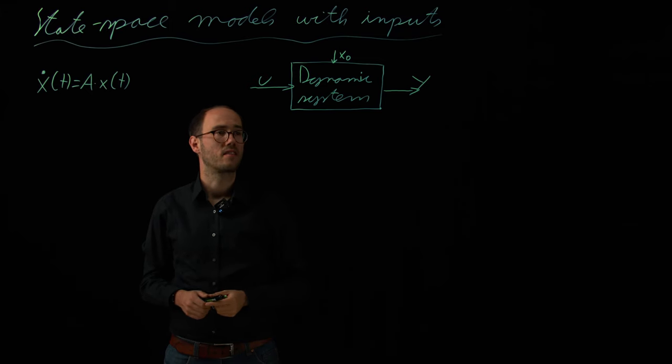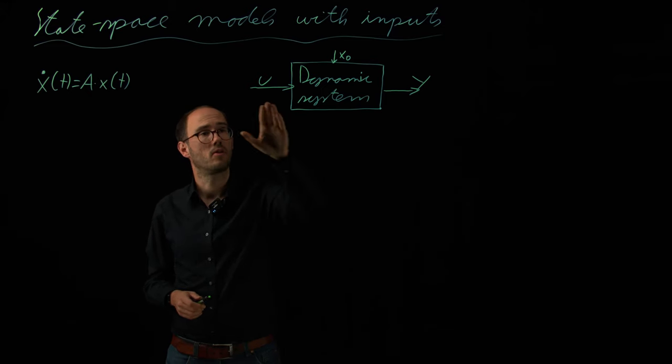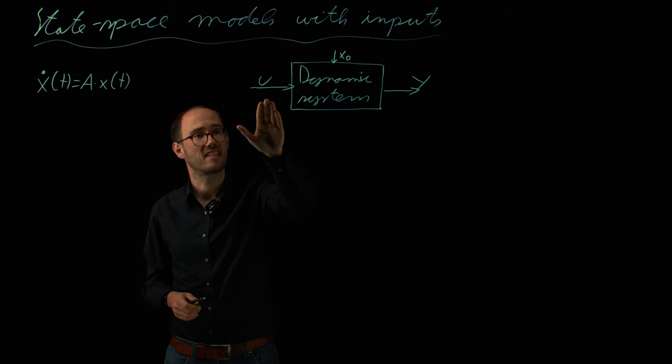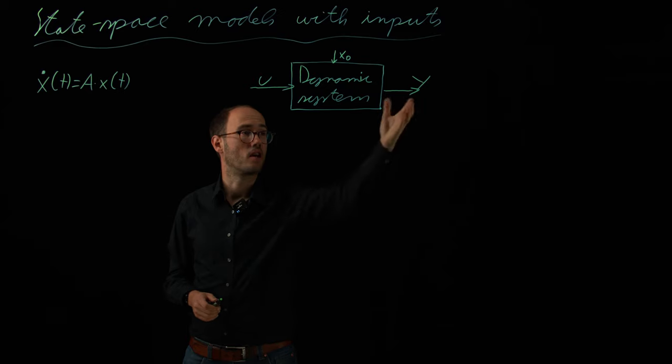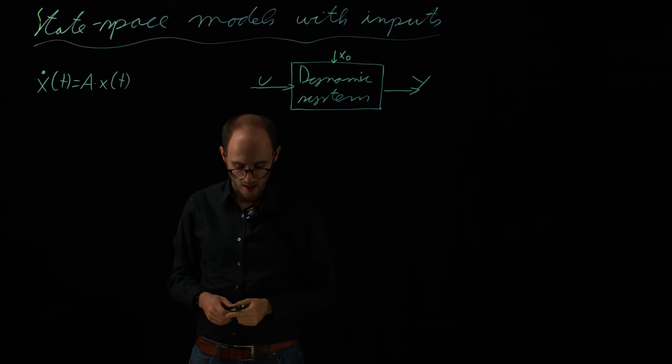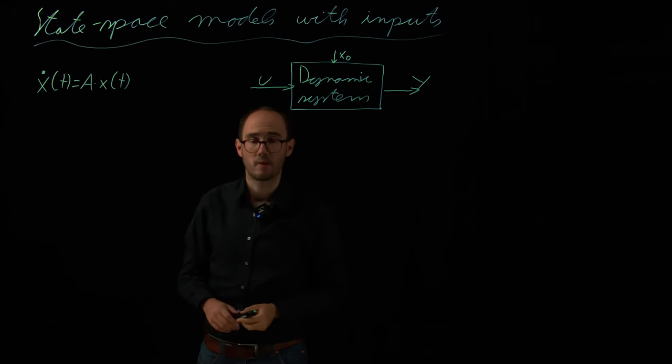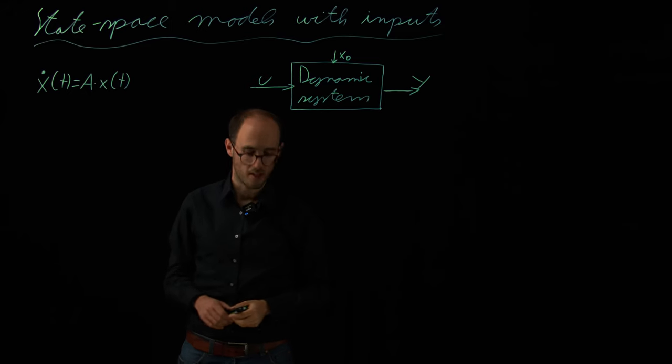So, therefore, the dynamic system term becomes a little bit more complex, because we do not only have states, but we also have inputs which we can excite, and we have the outputs y, which will be the measurements, the observables. And therefore, we have to extend a little bit our model scope, our state space model scope.